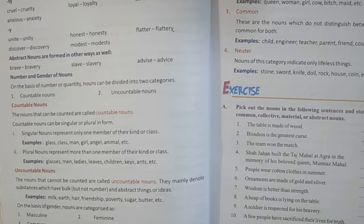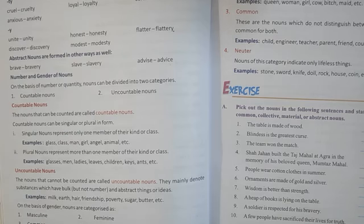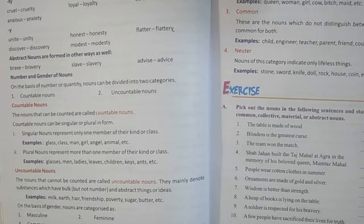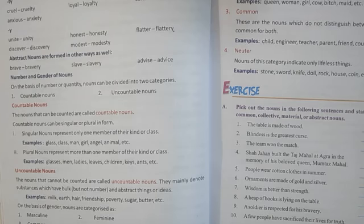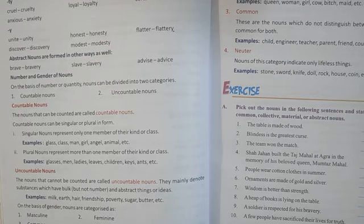Next are uncountable nouns. The nouns that cannot be counted are called uncountable nouns. For example, water — can you count water? Can you say 'waters'? No. Water is one noun which is uncountable; you cannot make it plural. So uncountable nouns are found in singular form only and cannot be formed into plural. They mainly denote substances which have bulk — not in numbers but in an amount.